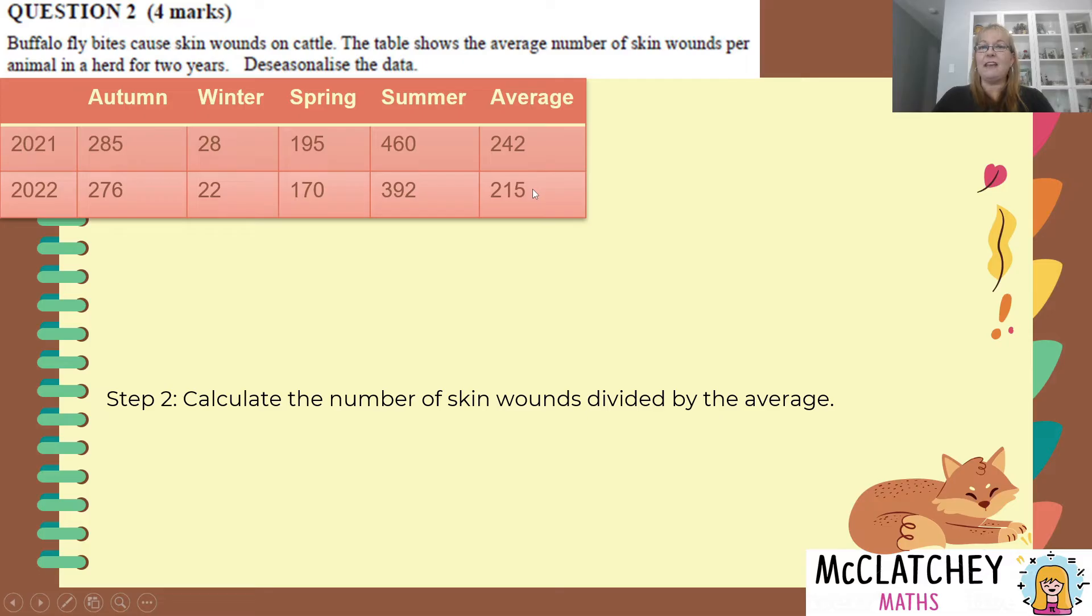Second step is to calculate the number of skin wounds divided by the average. So we're going to take each of these numbers and divide it by the average for the year and then each of these numbers individually and divide it by the average for that year. So make sure you keep the average for each year separate from each other.